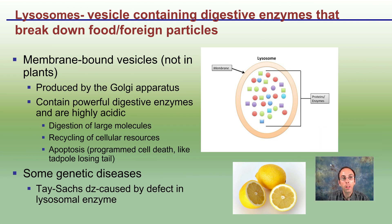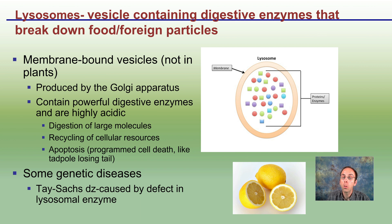Lysosomes are vesicles containing digestive enzymes that break down food and foreign particles. They are membrane-bound vesicles but are not found in plants. Produced by the Golgi apparatus, they contain powerful, highly acidic digestive enzymes — similar to how lemons are acidic — helping break down large molecules into smaller ones and recycling cellular resources. Apoptosis, or programmed cell death, like a tadpole losing its tail, is also involved with this process. Tay-Sachs disease is a genetic disease caused by a defect in lysosomal activity.